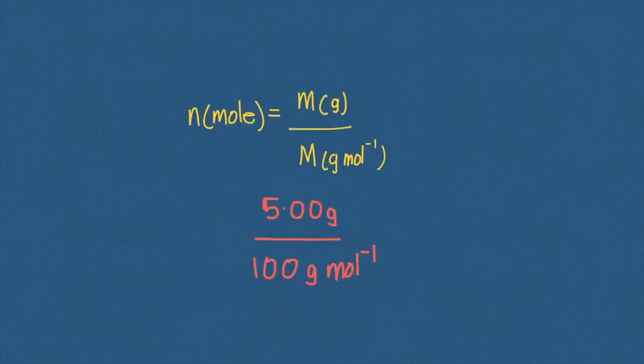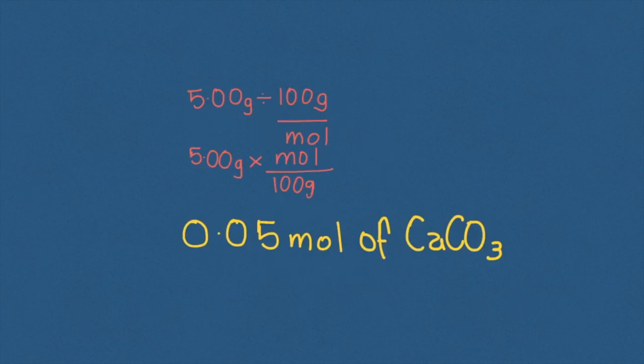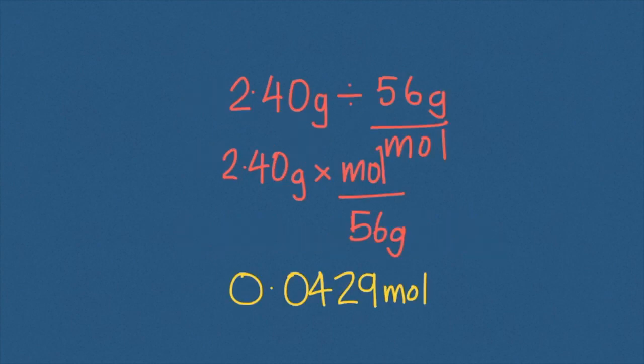Next, we calculate the number of moles of calcium carbonate consumed in the reaction, and this comes to 0.05 moles of calcium carbonate. Note how the units cancel here. Doing the same for calcium oxide, we get 0.0429 moles.